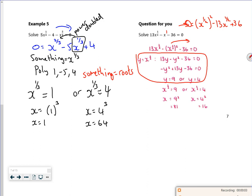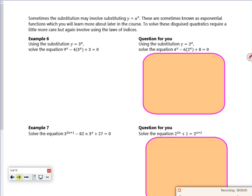I hope that made some sense. Isn't that the easiest thing to think of as disguised quadratics? It's dead nice when you can get it from the first one. Right, so it says sometimes substitution may involve substituting a^x. So we've got exponential functions, and we can make them as disguised quadratics as well.